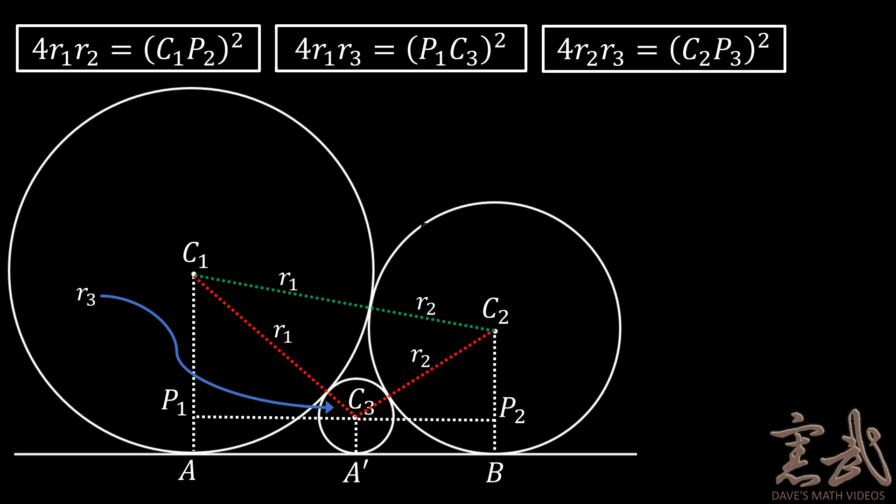4 times R1 times R3 is equal to C2P3 squared. However, P1P2 is simply equal to P1C3 plus C2P3. This allows us to write the square root of the equations that are boxed in at the top. The square root of the quantity 4 times R1 R2 is equal to the square root of the quantity 4 times R1 R3 plus the square root of the quantity 4 times R2 R3.